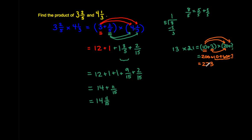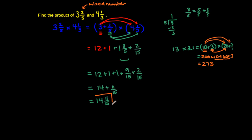So that is how we found the product of three and two-fifths and four and one-third using the distributive property and the meaning of what a mixed number is — because a mixed number is the sum of a whole number and a fraction. Hope you enjoyed! In the next video, I'll explain how you can look at three and two-fifths and four and one-third and give an approximate estimate of what the answer is going to be, so you can check whether 14 and eleven-fifteenths actually makes sense.